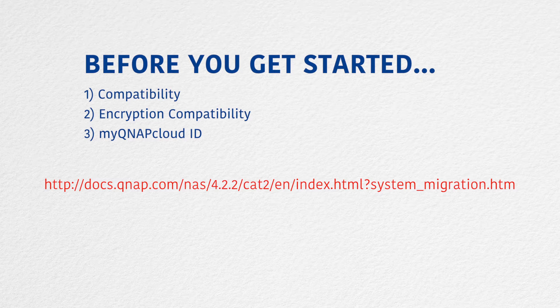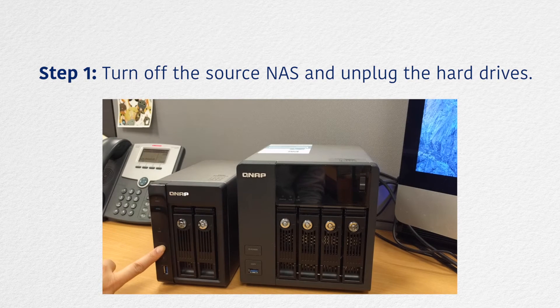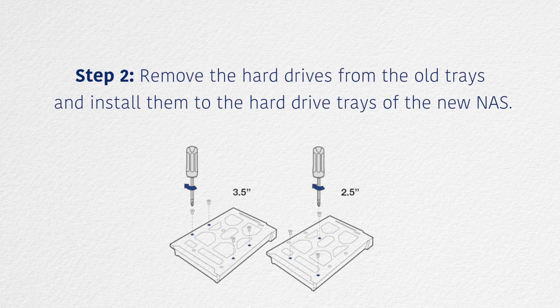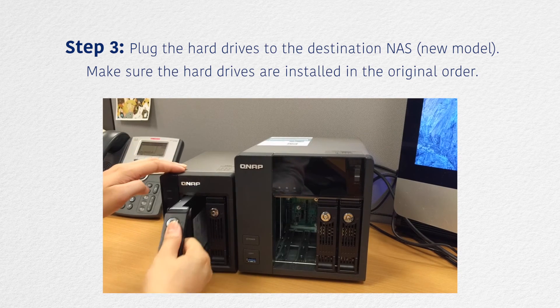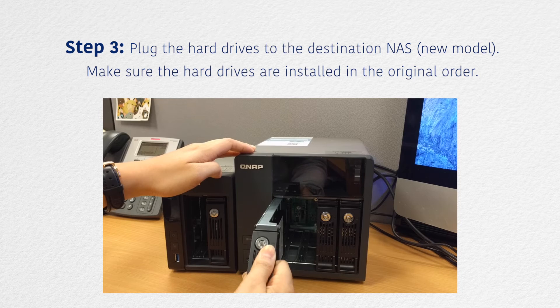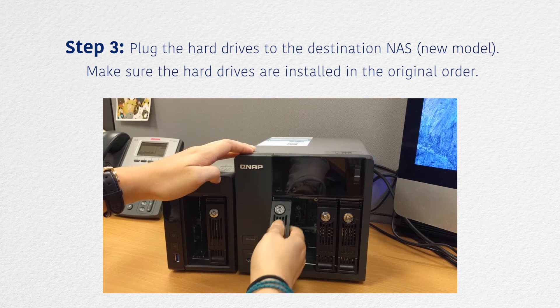So let's get started with our migration process. First, turn off the source NAS and unplug the hard drives. Second, remove the hard drives from the old trays and install them to the hard drive trays of the new NAS. Number three, plug the hard drives into the destination NAS, which is your new model or your larger unit. Make sure that the hard drives are installed in the original order.